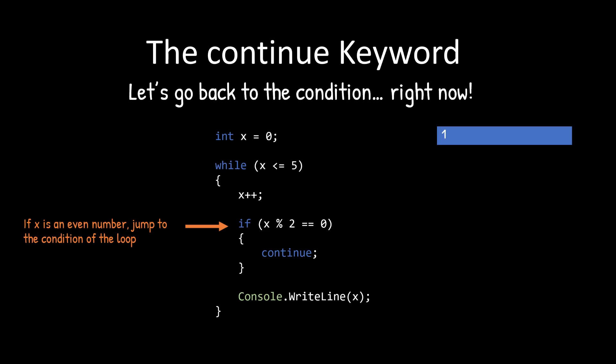It drops into the code block and it's going to make x two. And it's going to say, hey, two mod two is equal to zero, continue. And it's going to skip the rest of the block and jump back up to the while condition.